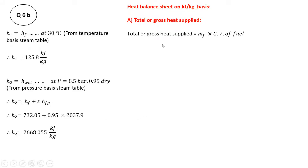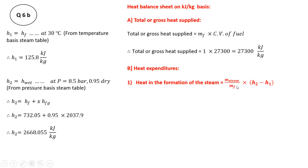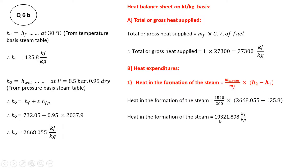The first part of the heat balance sheet is total or gross heat supplied, which is mass of fuel multiplied by calorific value of fuel. Since the heat balance sheet is on a per kg basis, mass of fuel is taken as 1 kg, so gross heat supplied equals 1 × 27300 = 27300 kJ per kg. Out of this total heat, some is used in steam formation. Dividing mass of steam by mass of fuel (1 kg) and multiplying by H2 minus H1, the heat in steam formation comes out to be 19321.898 kJ per kg.